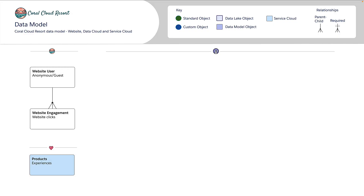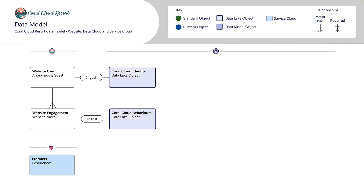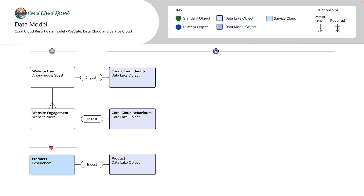So how do we get this information into Data Cloud? Data Cloud has a website connector that will allow us to ingest the website data we need. Website users come across as an identity data lake object and the engagement comes across as a behavioral data lake object. We're also going to ingest those products from Service Cloud so we can map them to the engagement. We need to make sure that this ingested data is mapped to a consistent schema.